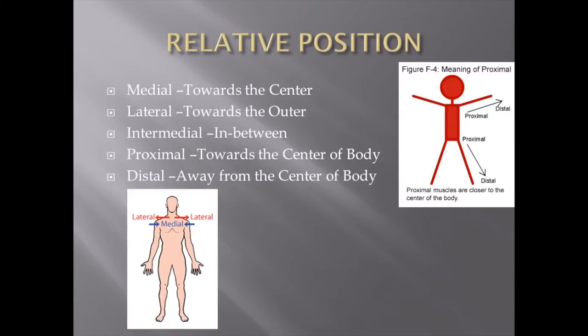Let's talk about relative position. Medial means toward the middle of the body; lateral means toward the outside. We're talking about different parts of the body in relation to each other. For example, the sternum is medial to the shoulders — it's closer to the midline — and the shoulders are lateral to the sternum. Similarly, the ears are lateral to the eyes, and the eyes are medial to the ears.